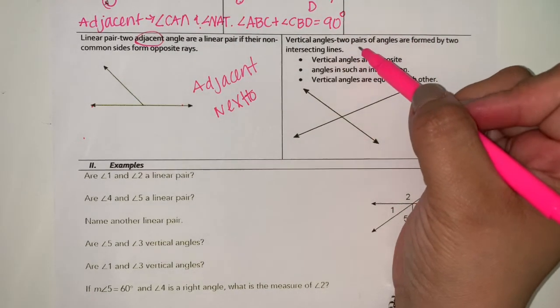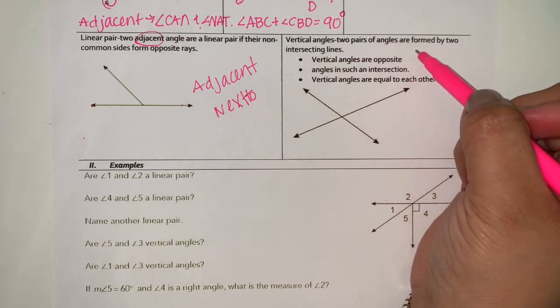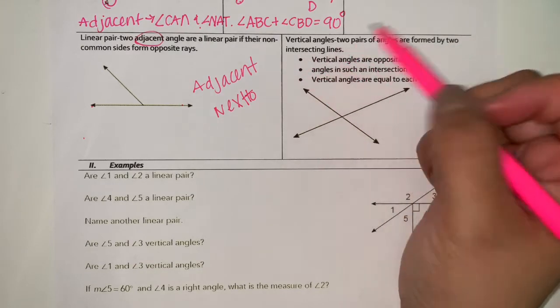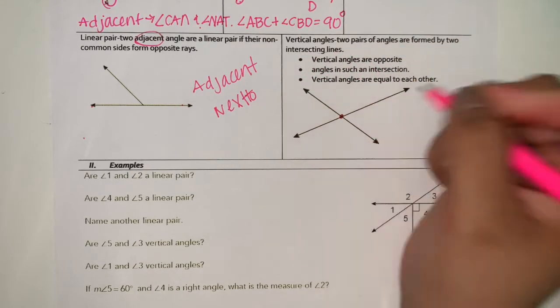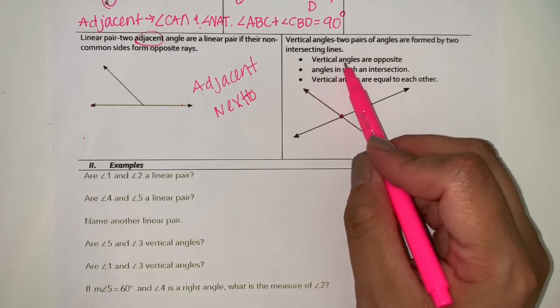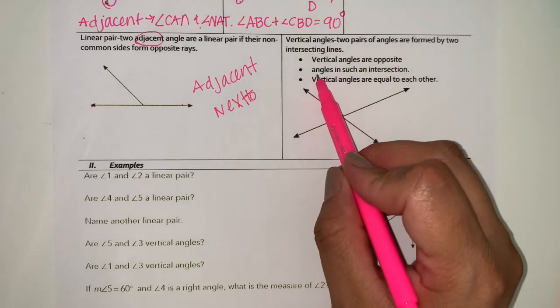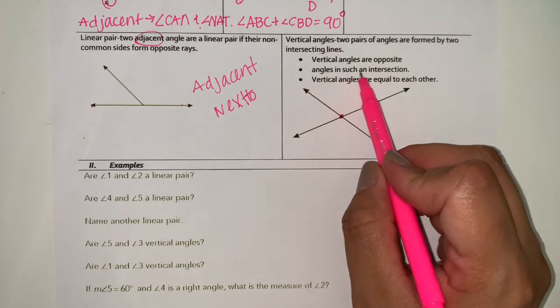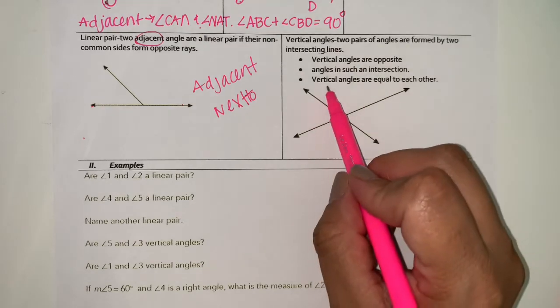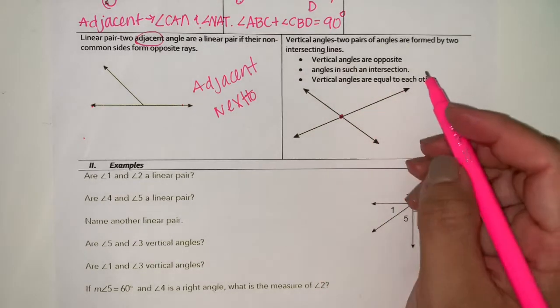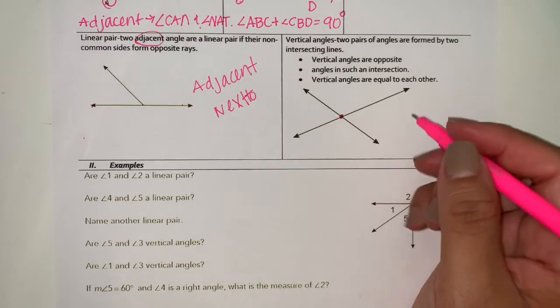Next you have vertical angles. Two pairs of angles are formed by two intersecting lines, so that means you're going to have a point of intersection. The vertical angles are opposite angles in such an intersection. And vertical angles are equal to each other. So this is the important part.